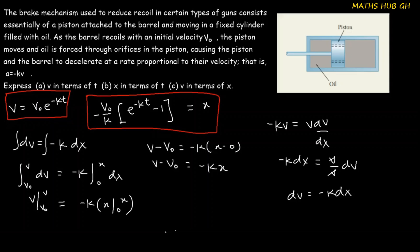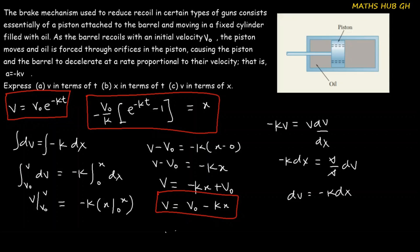Taking v-naught to the right-hand side gives v equals v-naught minus kx. This is the answer for part (c). Thank you very much for watching this video. Please make sure you like and subscribe. See you next time!